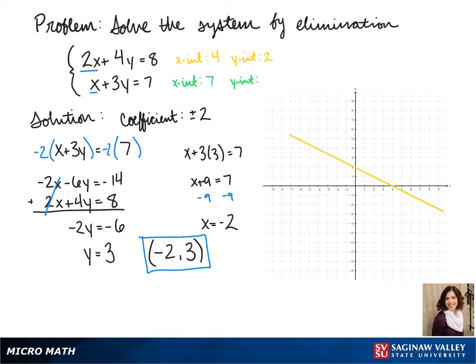And then for our second equation, the x-intercept is 7, and the y-intercept is 7 thirds. In this case, we might want to find our slope to help us out. In this case, it's negative 1 third. So we can graph our x-intercept of 7, and use our slope to find our other points.